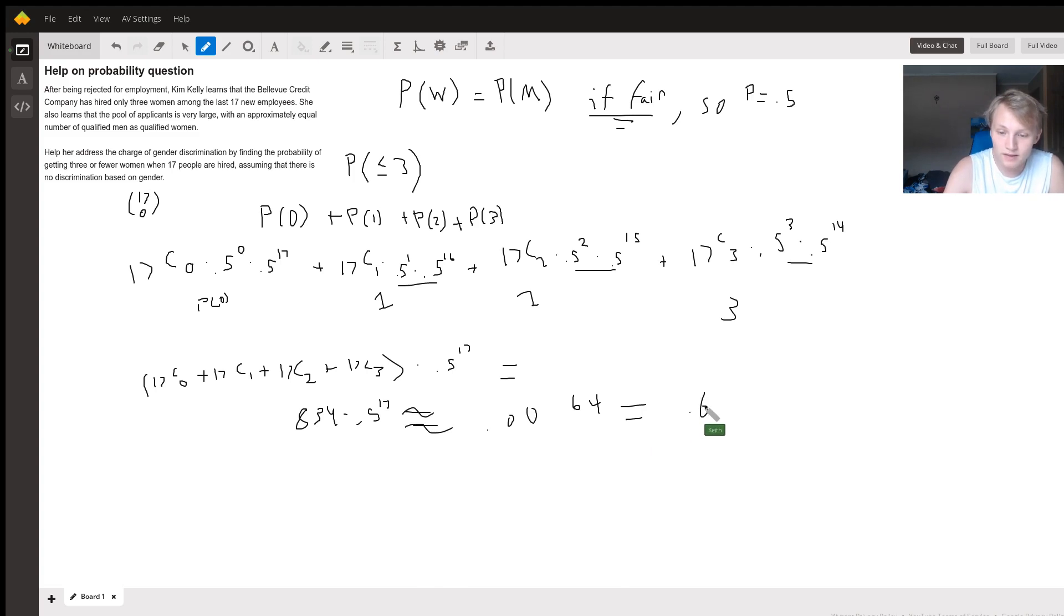So in other words, there is approximately a 0.64 percent chance that no gender discrimination is going on here. Because the odds of this happening in a fair system are so low, it's probably gender discrimination. So that's your answer: 0.0064 or 0.64 percent.